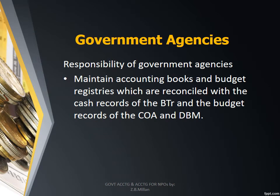Government agencies are responsible for maintaining accounting books and budget registries, which are reconciled with the cash records of the Bureau of Treasury and the budget records of the Commission on Audit and the Department of Budget and Management. As you can observe, accounting responsibility is segregated to various government agencies — the Commission on Audit, the Department of Budget and Management, Bureau of Treasury, and the different government agencies.